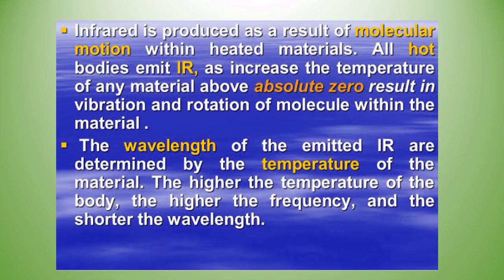Infrared is produced as a result of molecular motion within heated materials. All hot bodies emit infrared radiation. Increasing the temperature of any material above absolute zero results in vibration and rotation of molecules within the material. The wavelength of emitted infrared is determined by the temperature of the material — the higher the temperature, the higher the frequency and the shorter the wavelength.